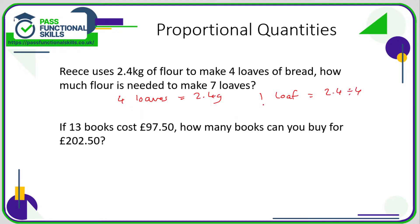One loaf is going to be 2.4 divided by 4, because we're making four times less bread so we need four times less flour. 2.4 divided by 4 is 0.6, so we need 0.6 kilos per loaf. For seven loaves it's simply 7 multiplied by 0.6, which comes to a total of 4.2 kilos.